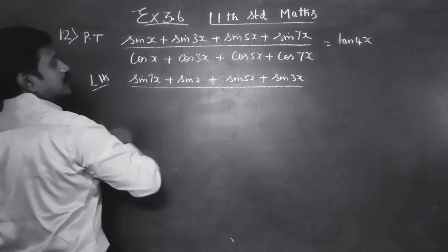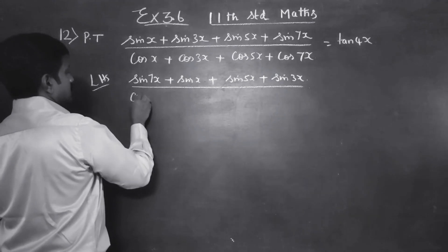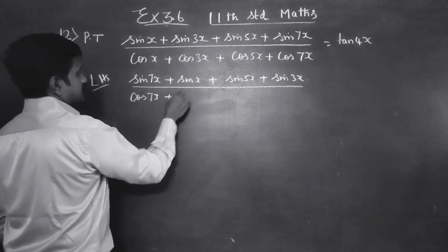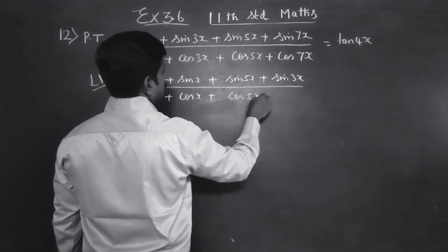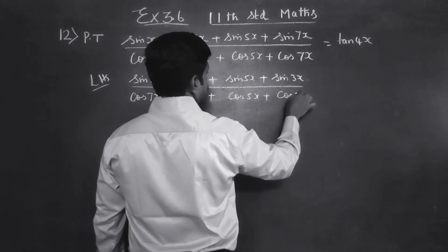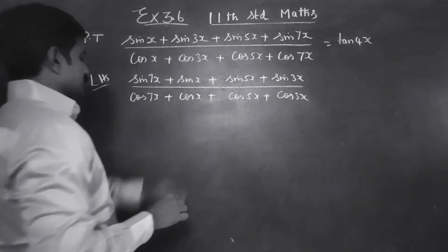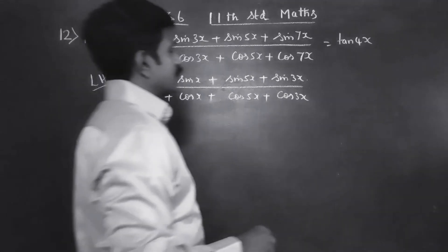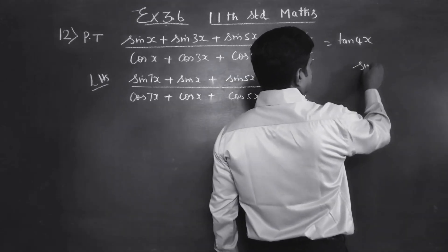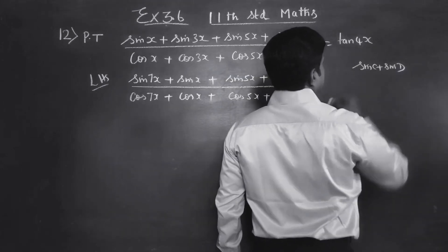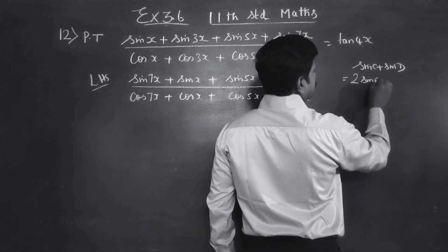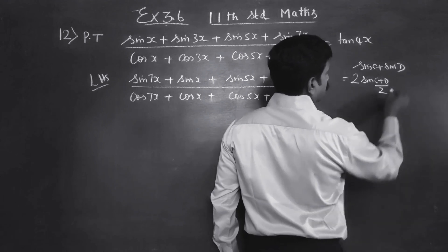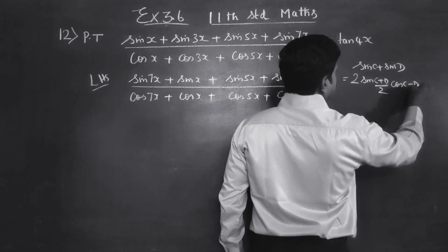Starting my LHS with cos 7x with cos x, and cos 5x with cos 3x. We will just recall a formula. What is sin c plus sin d? Sin c plus sin d is 2 sin of (c plus d) by 2, cos of (c minus d) by 2.